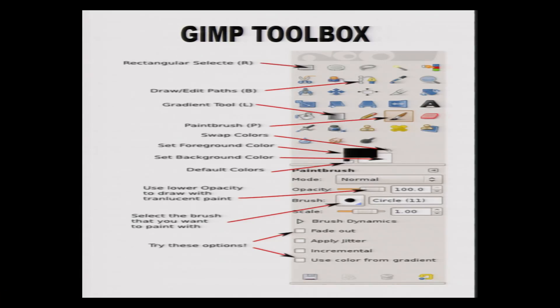Most of these tools are used for applying intelligence to get the output effectively in terms of selection. If we are able to do the selection appropriately, it will be useful for further editing. We can see the GIMP toolbox and some of the tools we have already covered in earlier sessions. In the first row, the fourth tool is the fuzzy select tool.